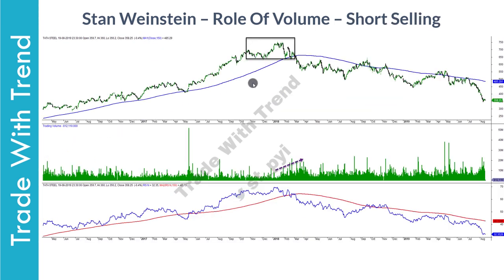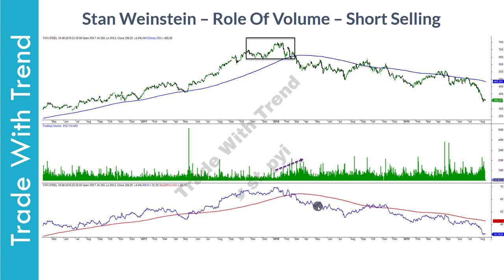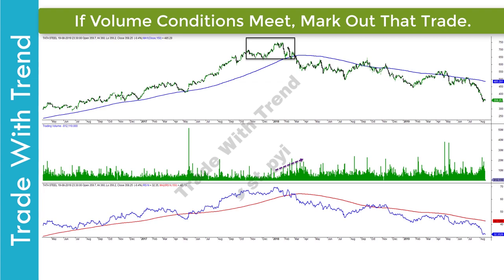When short selling, you should at all times expect volume expansion on an immediate basis. In this chart, price is transitioning from stage three to stage four — visible in price action and in the RS indicator moving lower. Transition is happening via price moving below the range and below the 150-period moving average. As price started moving lower, there was a clear pickup in volume. Prior to the down move, volumes were clearly on the lower side, reflecting lack of commitment by traders. When you spot this on a chart, always mark it as a high probability trade.